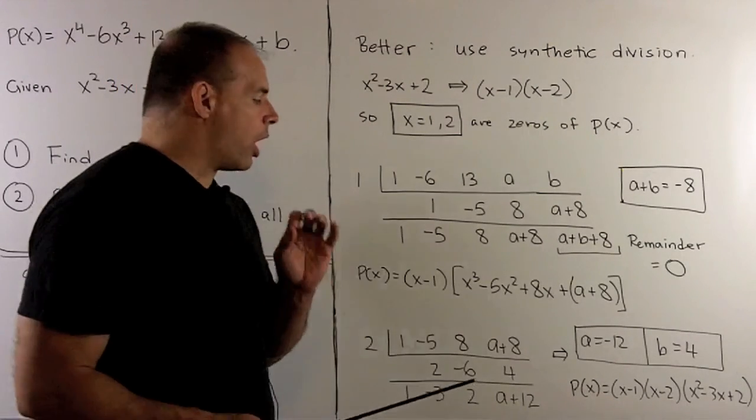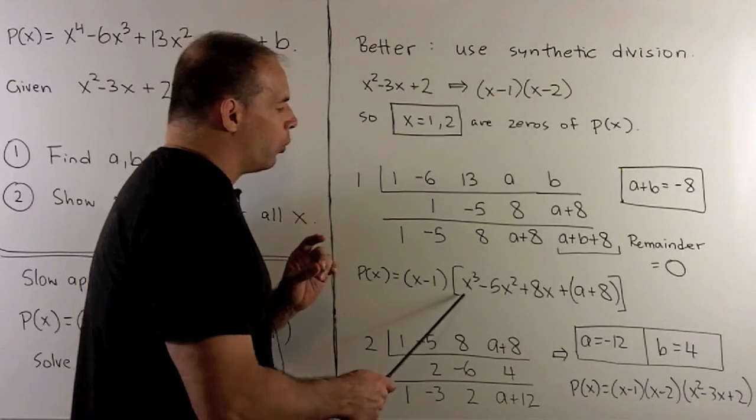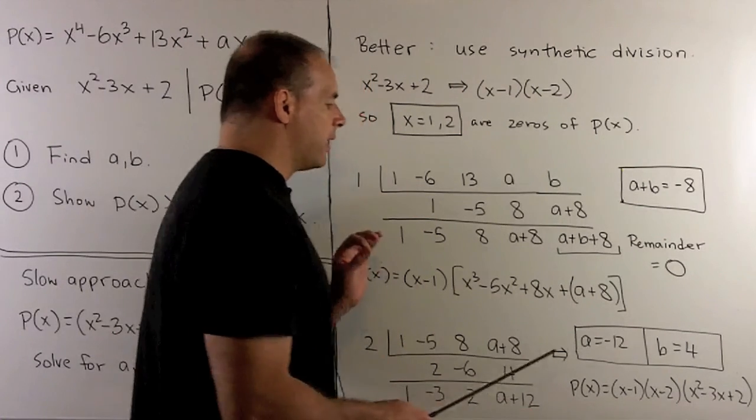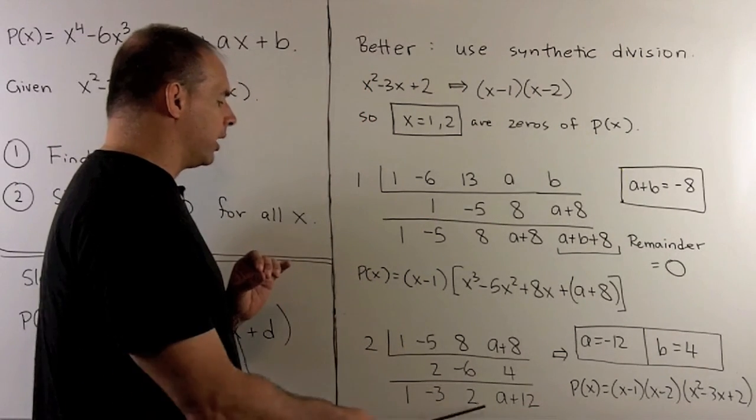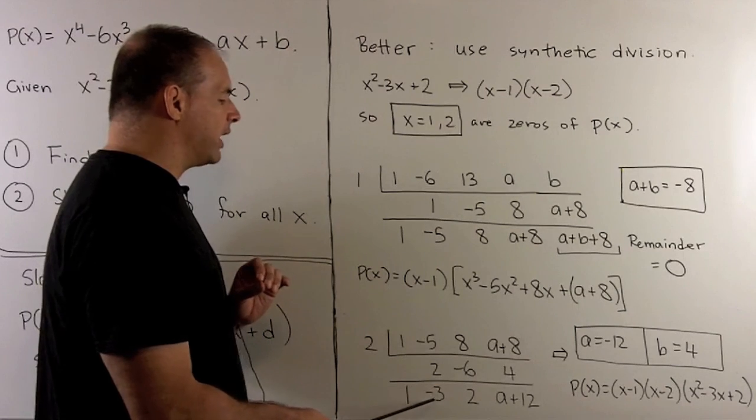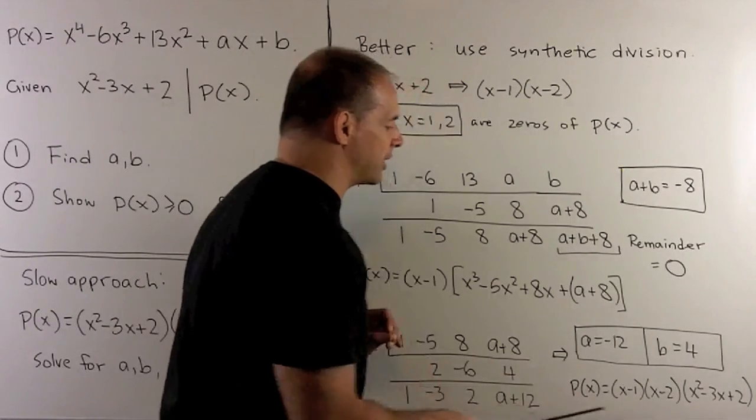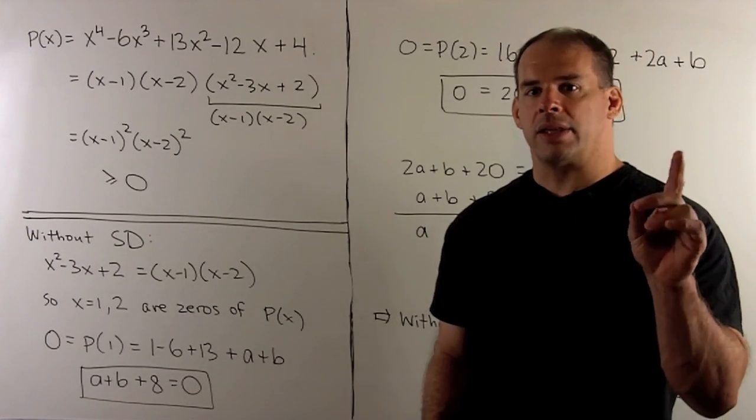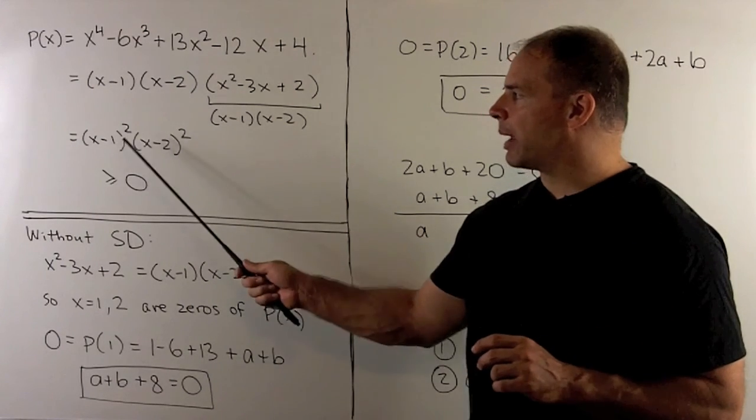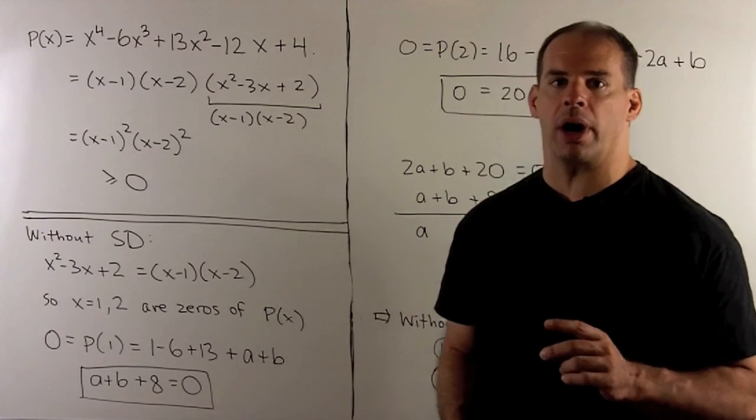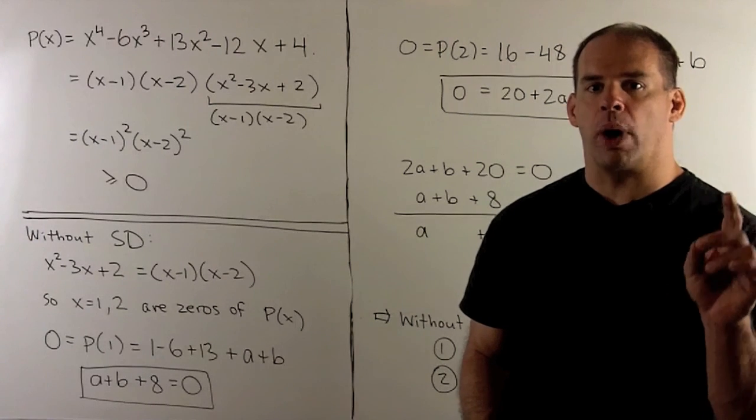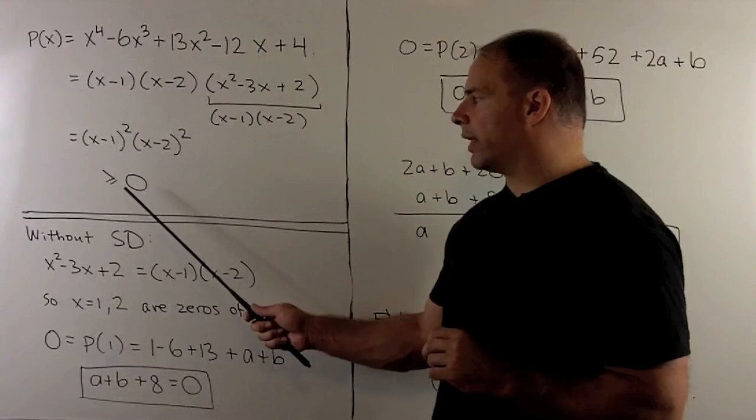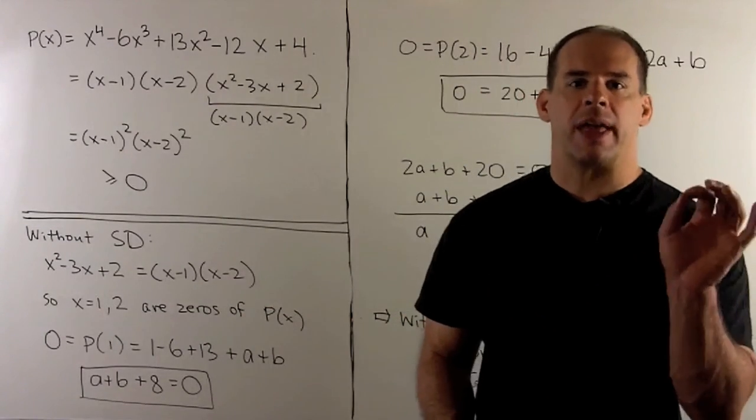Now note, we'll also have, what happens when we factor this? So we're going to pull out an X minus 2. And then what's left, we just read off of the last row here. So I'll have X squared minus 3X plus 2. And that's our P of X. Now that lets us factor P of X completely as X minus 1 squared times X minus 2 squared. We take any number and square it. We get 0 or a positive number. So that means P of X is always greater than or equal to 0. So that's our problem.